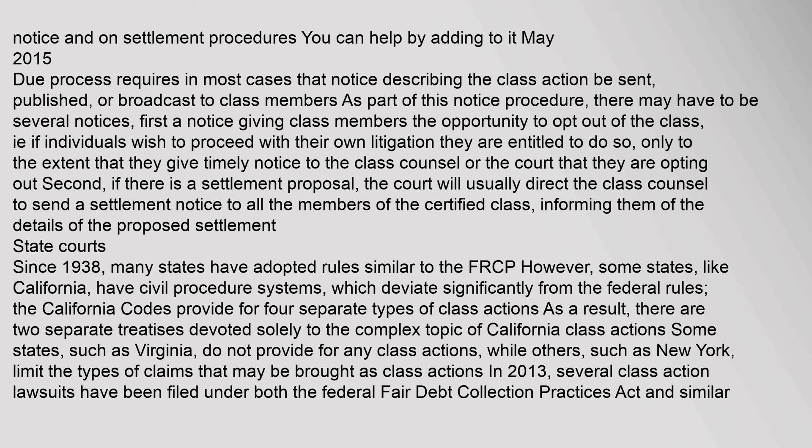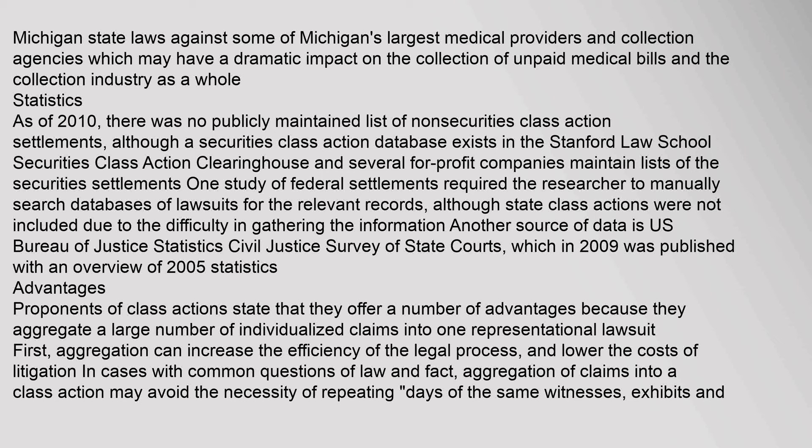Since 1938, many states have adopted rules similar to the FRCP. However, some states, like California, have civil procedure systems which deviate significantly from the federal rules — the California codes provide for four separate types of class actions. Some states, such as Virginia, do not provide for any class actions, while others, such as New York, limit the types of claims that may be brought as class actions. In 2013, several class action lawsuits were filed under both the Federal Fair Debt Collection Practices Act and similar Michigan state laws against some of Michigan's largest medical providers and collection agencies.